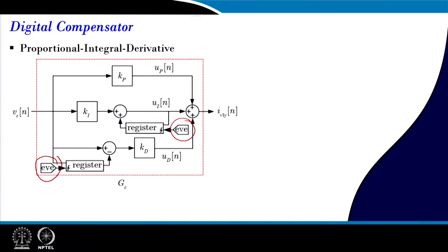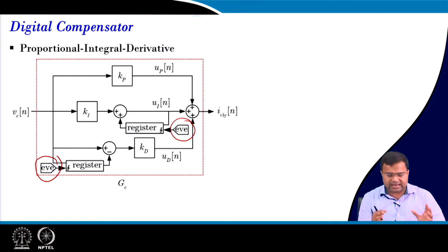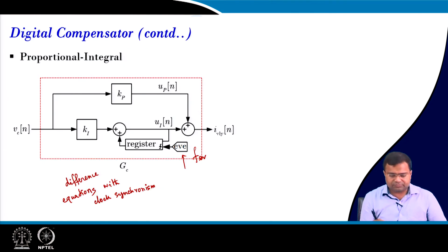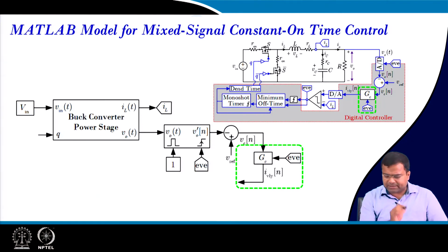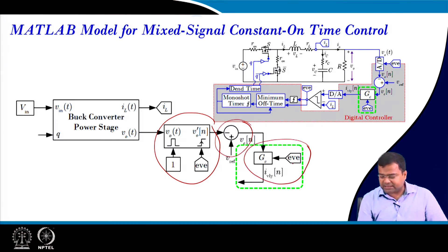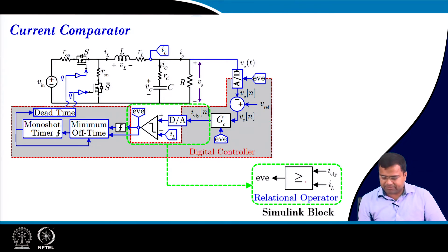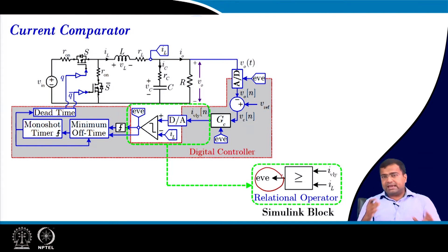Going back to our realization, since we are using current mode control, we will not use a PID controller but a PI controller, though a generic PID realization is shown. This is the complete MATLAB block diagram. Once you have the event-triggered ADC, you have an error voltage, then the controller updated by the event clock, and then the current comparator — which is simply a comparator in MATLAB since the current loop is in analog.